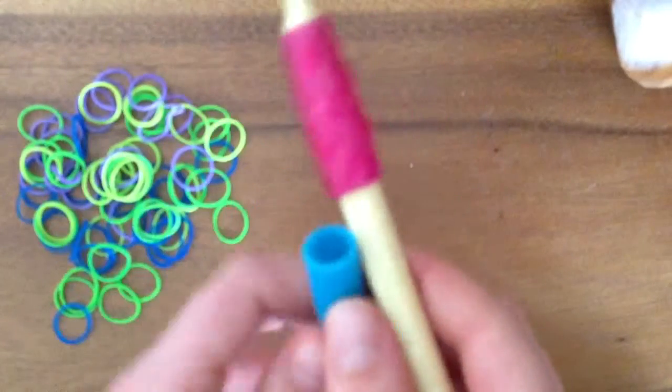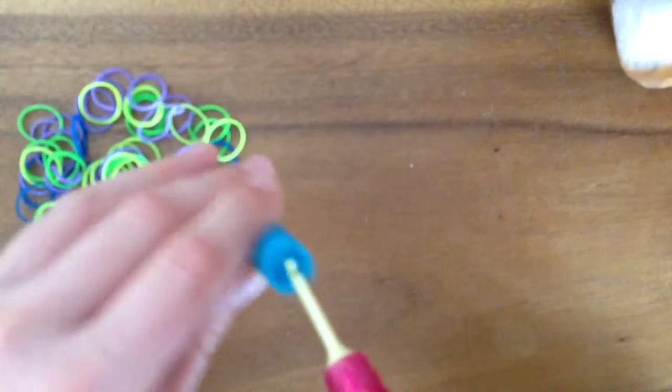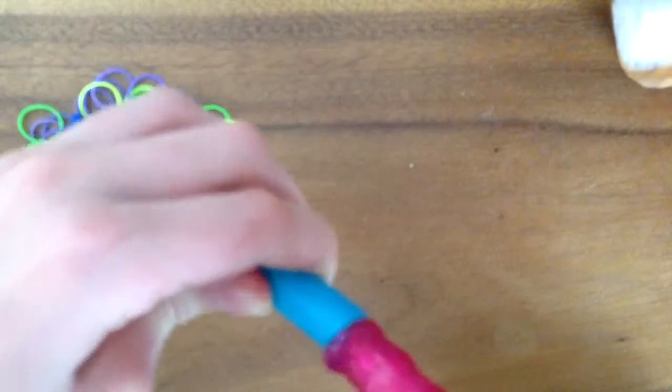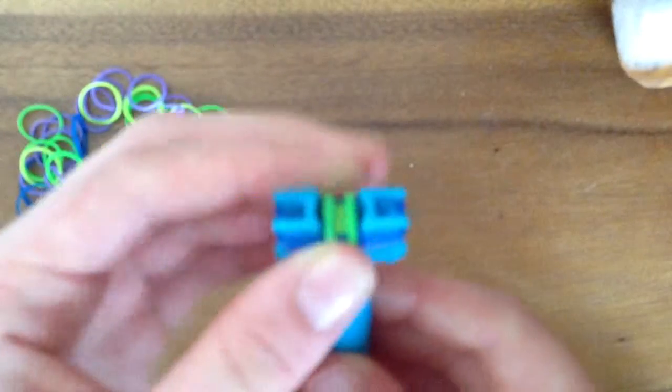And then once I can reach it with my crochet hook, you stick it through and pull down any rubber band you can. And then it's going to start to form.